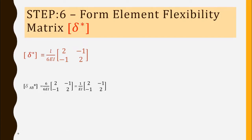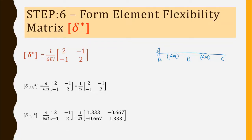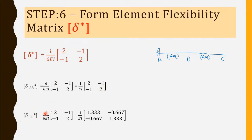For each element, we find the element flexibility matrix. For element AB with L = 6 meters: the matrix is (6/6EI) times [2, minus1; minus1, 2], which equals (1/EI) times [2, minus1; minus1, 2]. For element BC with L = 4 meters: the matrix is (4/6EI) times [2, minus1; minus1, 2], giving values of 1.33, minus 0.667, minus 0.667, and 1.33 divided by EI.